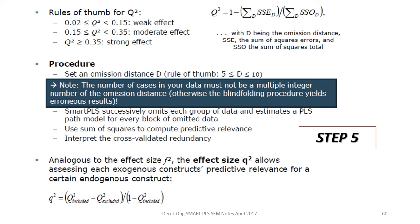There is a difference between the predictive relevance and effect size. The effect size deals with each contribution of the exogenous variables on the endogenous variables, whereas the predictive relevance will use the omitted data set and simultaneously use a prediction method to predict the predictive relevance for a certain endogenous construct based on the omitted data set of the exogenous.